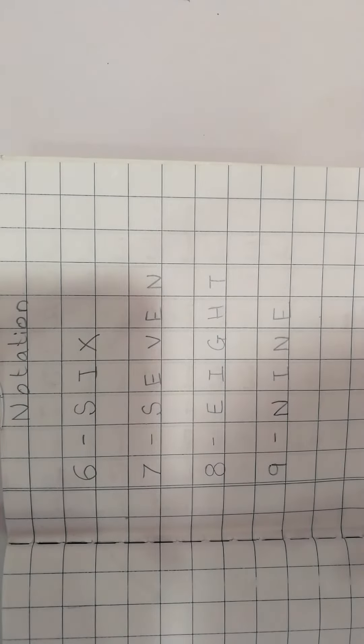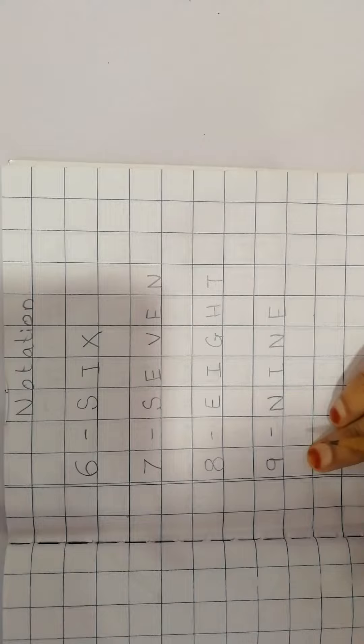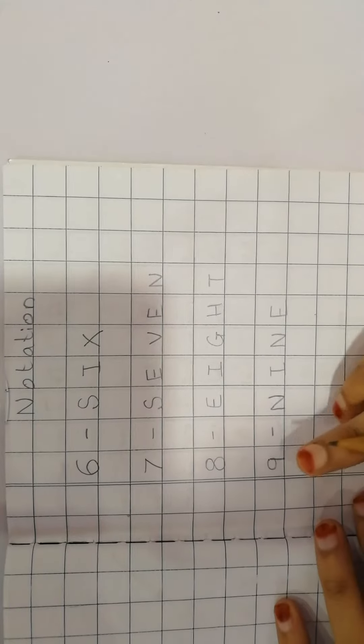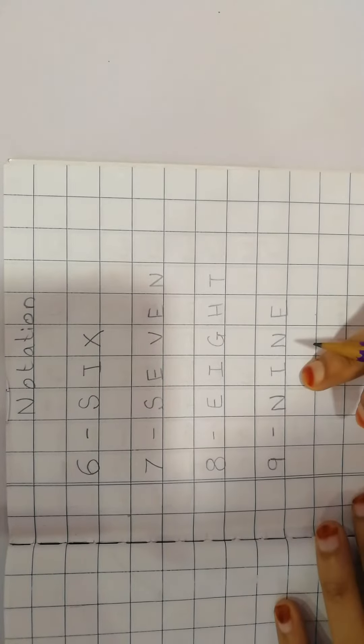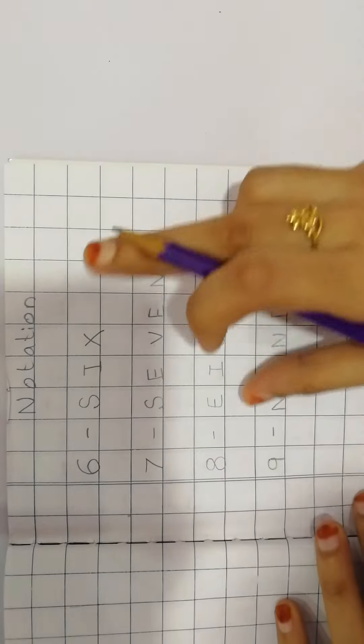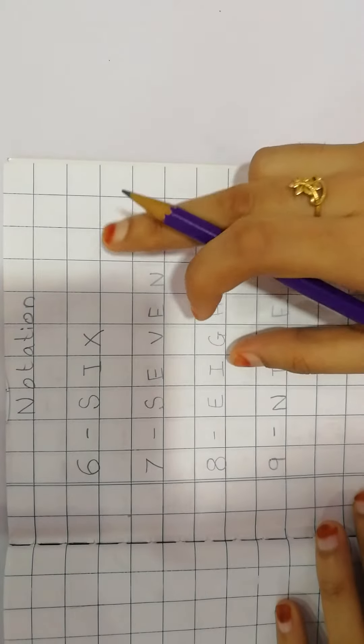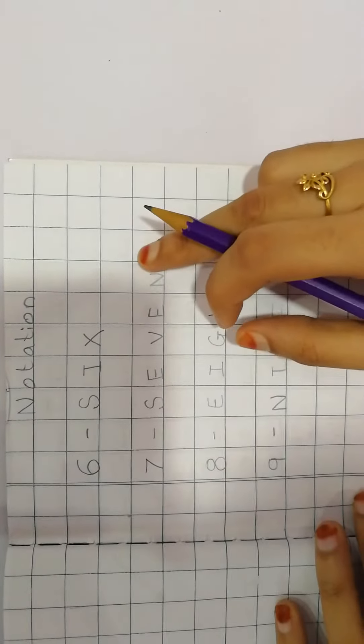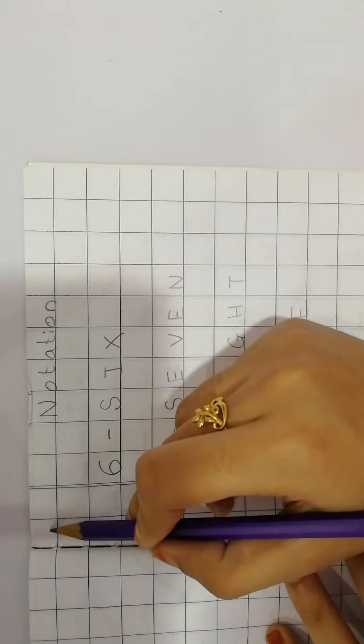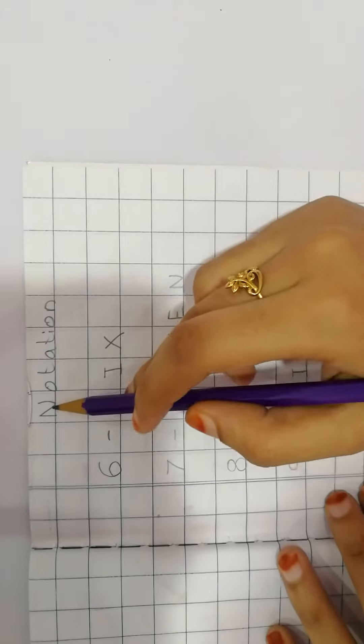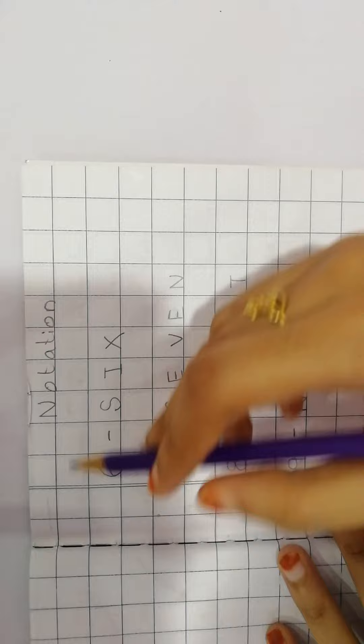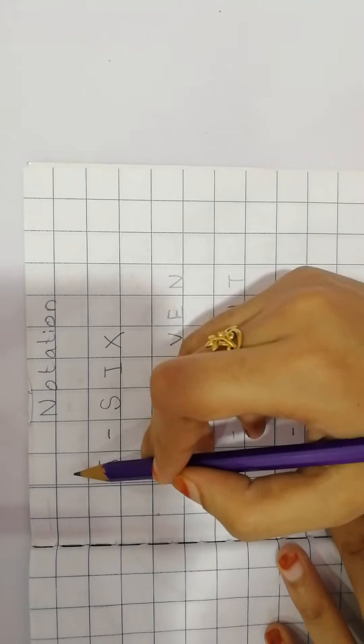So children, what will we learn today? We are going to learn the next number name. But before that, quickly run and take out your square line book, math notebook. Write today's date in the date column. Give the title notation and start writing our today's number.